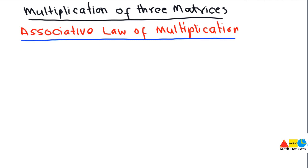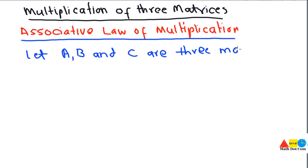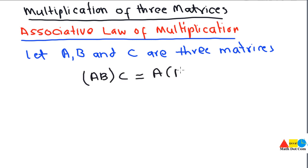This law is stated as: if you have three matrices A, B, and C, then according to the associative law of multiplication they will be multiplied together. It means that you can multiply two matrices together and then the result will be multiplied with the third one.